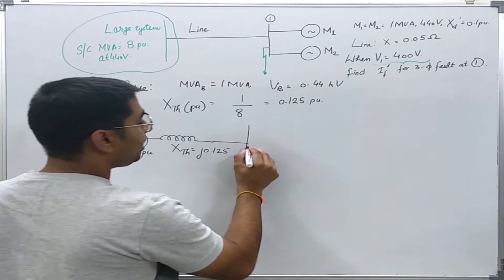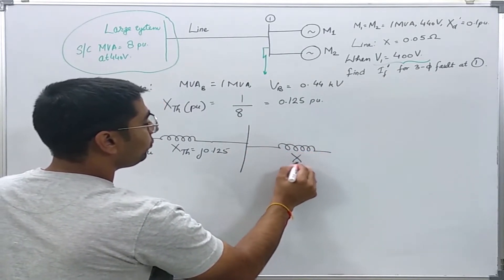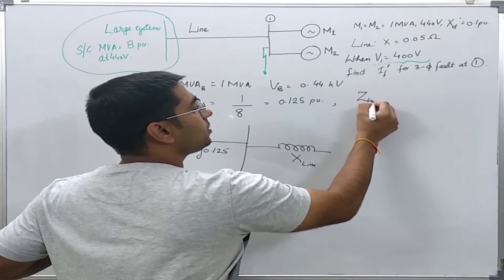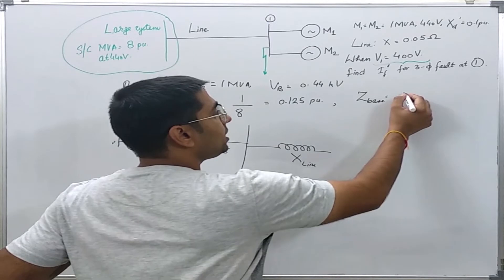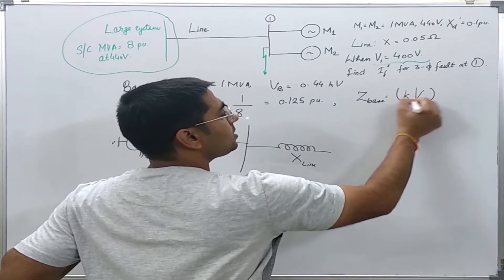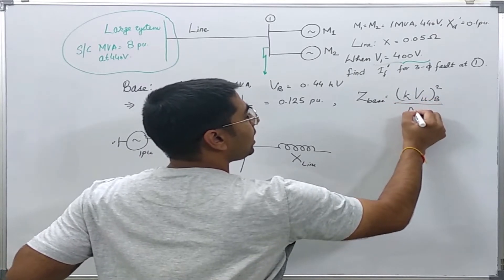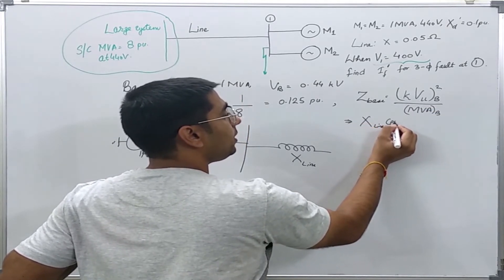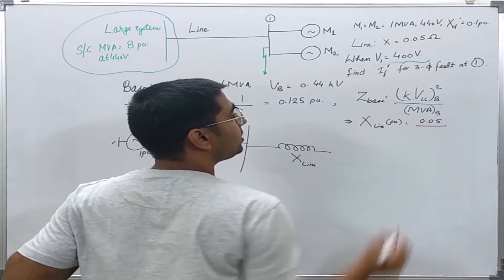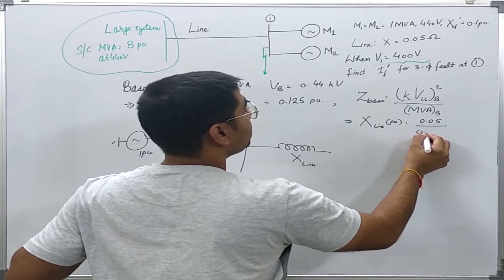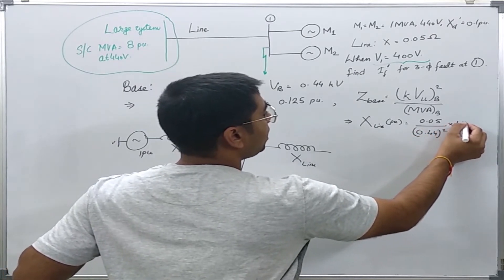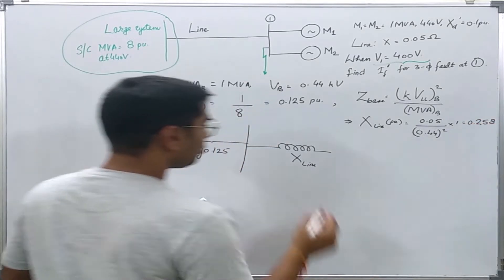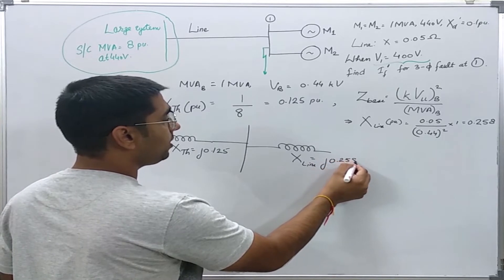The power system is connected through a line with reactance X_line. The Z base for the line is KV²(line-to-line) base divided by MVA base. So X_line in per unit is 0.05 divided by Z_base, where Z_base is 0.44² divided by 1, giving X_line = 0.258 per unit.